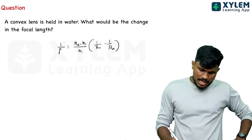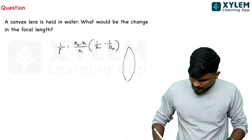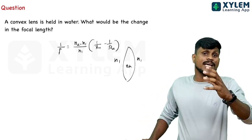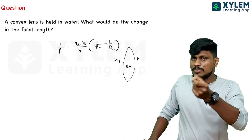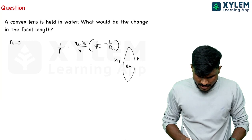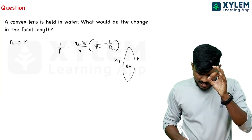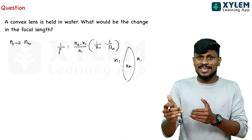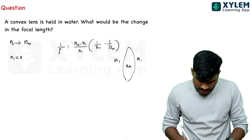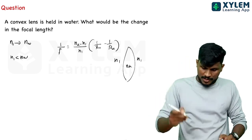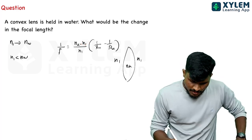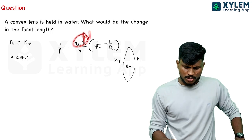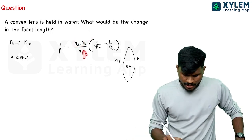The lens has a refractive index. When placed in water, N1 increases. The value of N2 minus N1 decreases, so the total quantity 1/F decreases, meaning the focal length F increases.